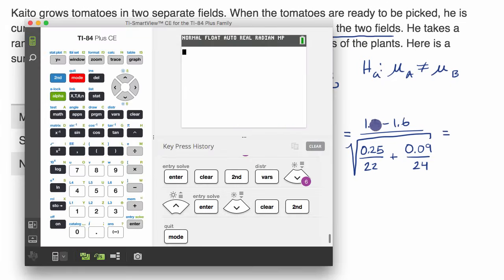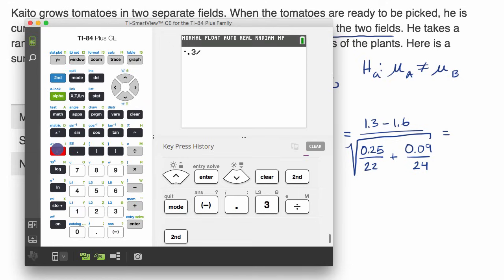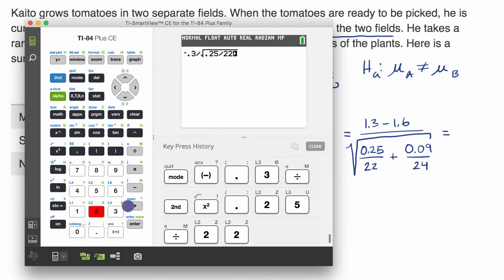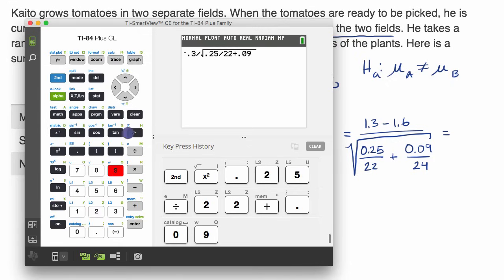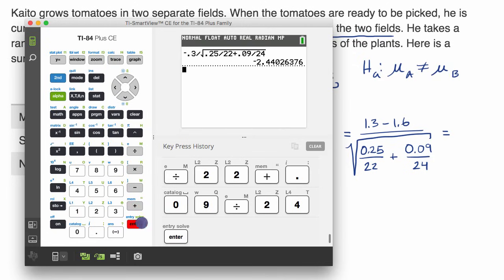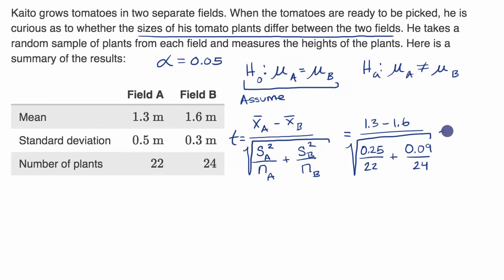The numerator is just going to be negative 0.3, divided by the square root of 0.25 divided by 22, plus 0.09 divided by 24. And that gets us negative 2.44, approximately negative 2.44.